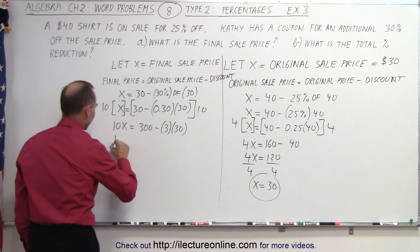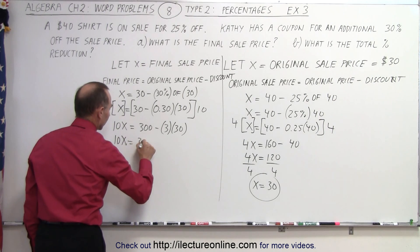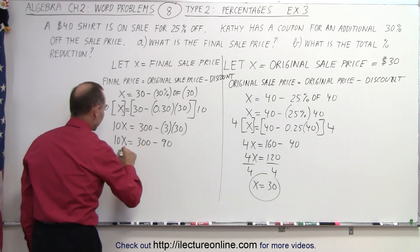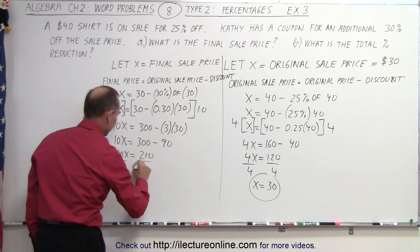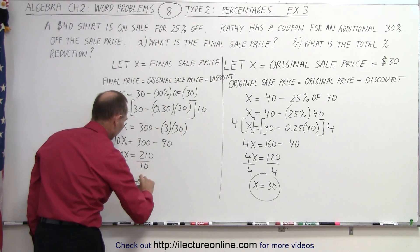Okay, I can go ahead and finish it off by saying 10x is equal to 300 minus 90 or 10x is equal to 210. Divide both sides by 10 and we get x is equal to 21.